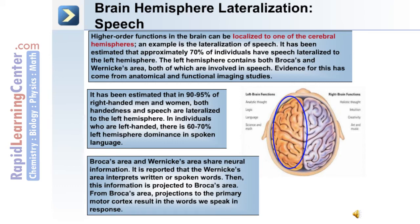Broca's area and Wernicke's area share neural information. Wernicke's area interprets written or spoken words, then this information is projected to Broca's area. From Broca's area, projections to the primary motor cortex result in the words we speak in response.